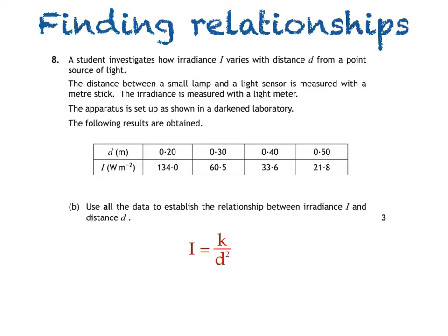If we multiply both sides by d squared, we get I times d squared is equal to a constant k. All we have to do then is to multiply irradiance by distance squared. We find that the values are very similar. The slight difference in the final value can be put down to the uncertainties in the values for irradiance and distance. The last thing we'd have to do then is to state the relationship: I times d squared is a constant.